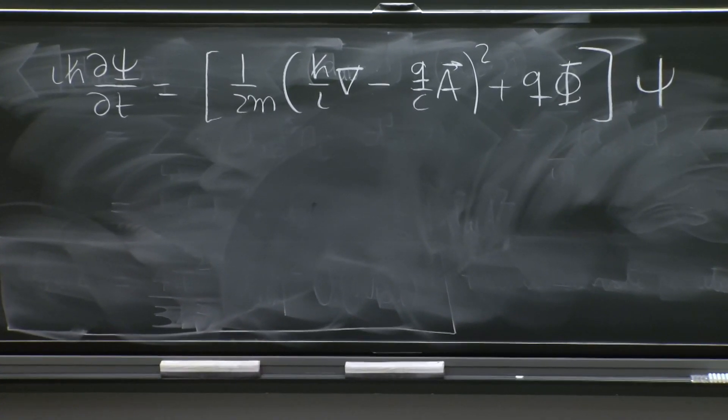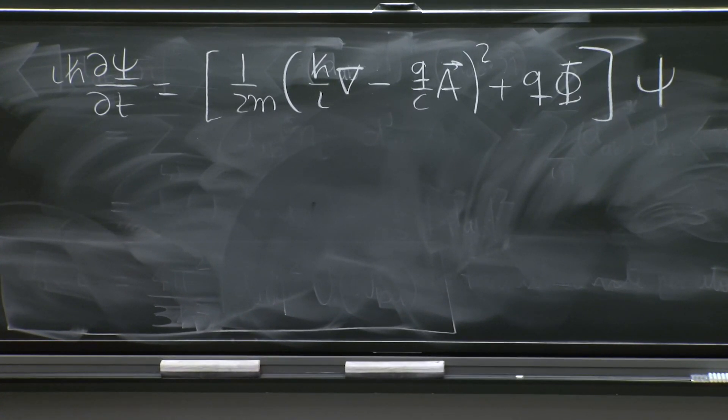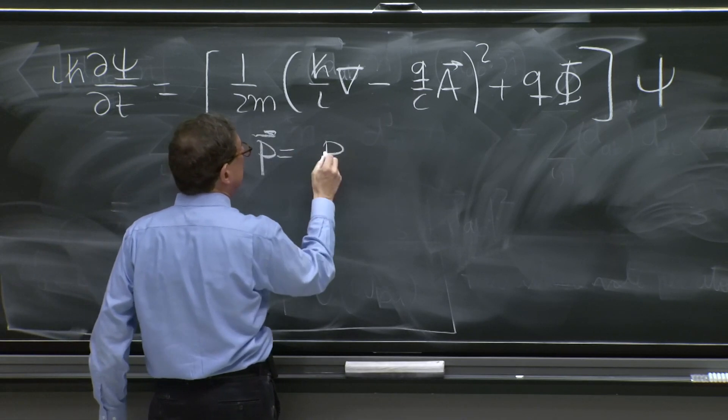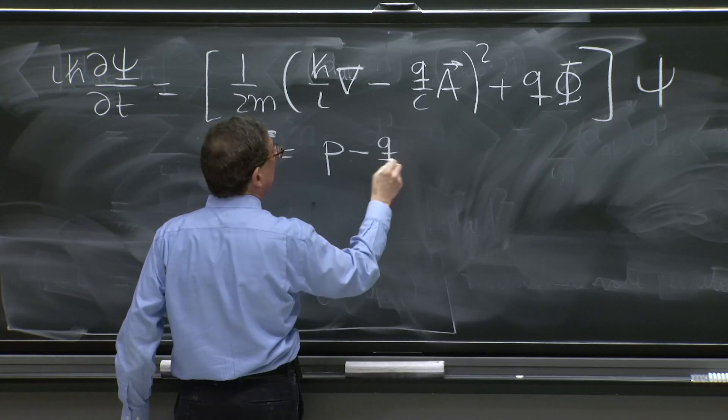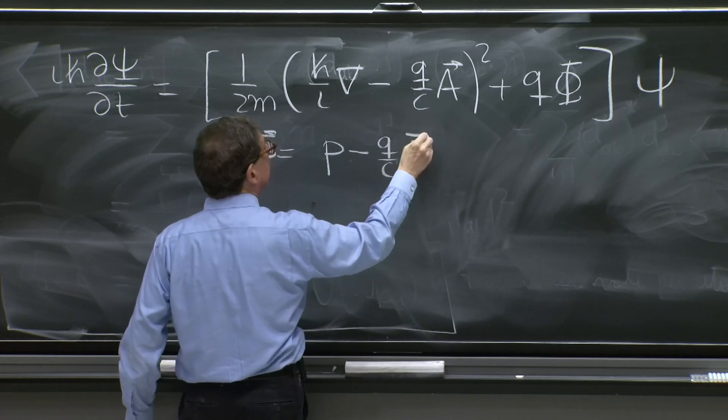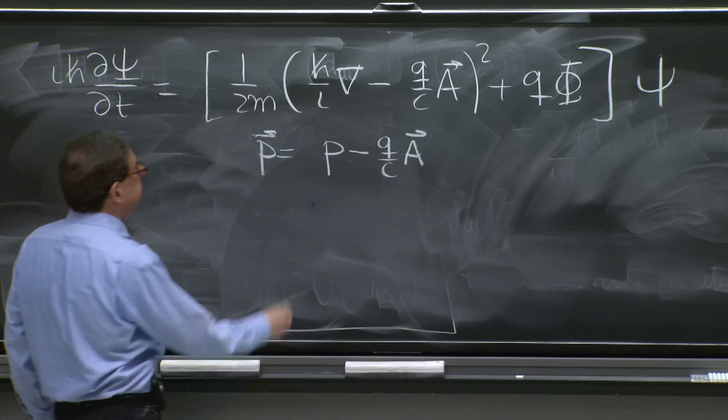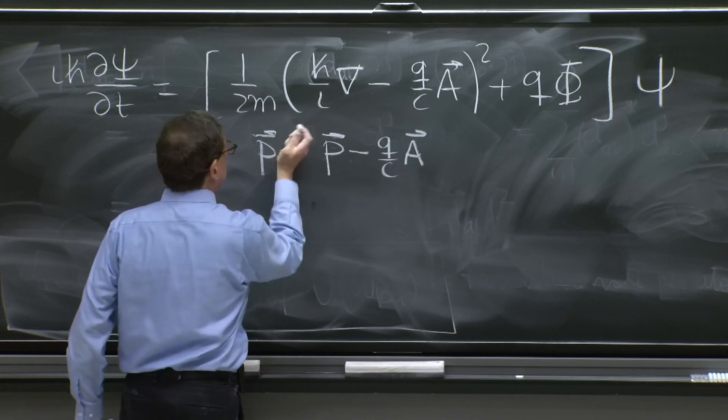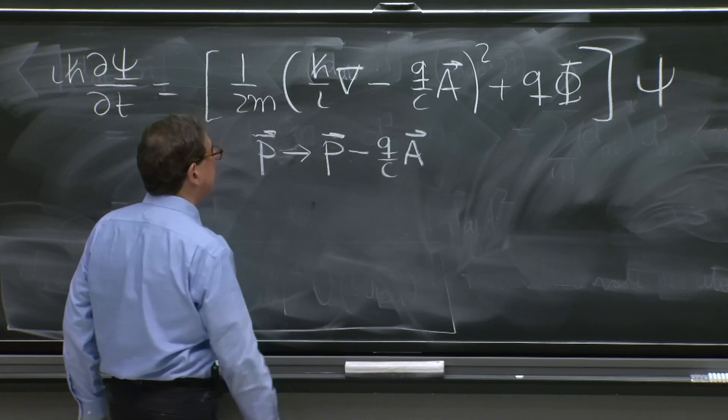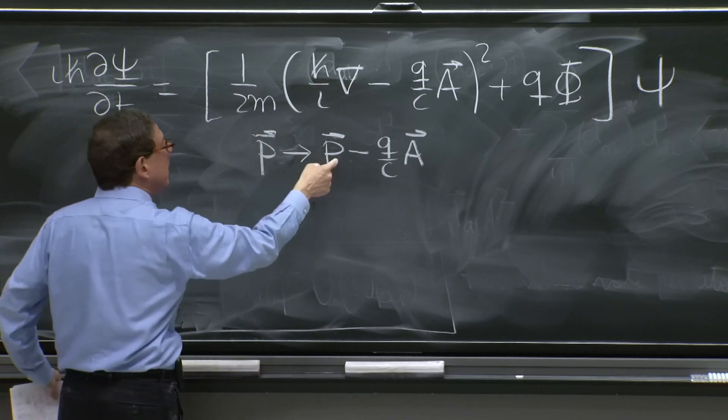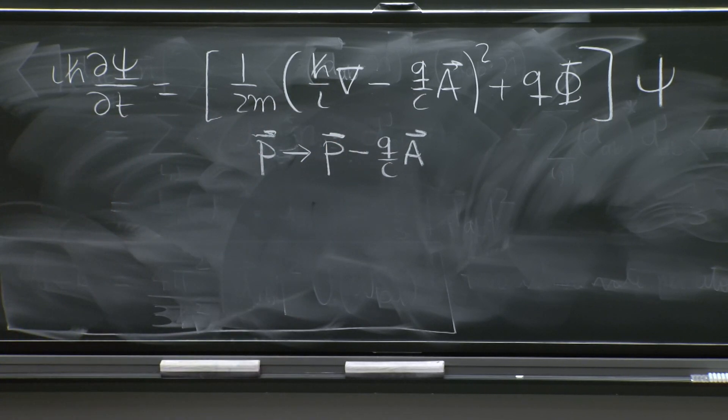There's several things we've done here. We've replaced p by p minus q over c A. Now, this is a replacement. p has been replaced by that. We used to have p² over 2m, now we have this quantity. We will see why that is the right thing to do.